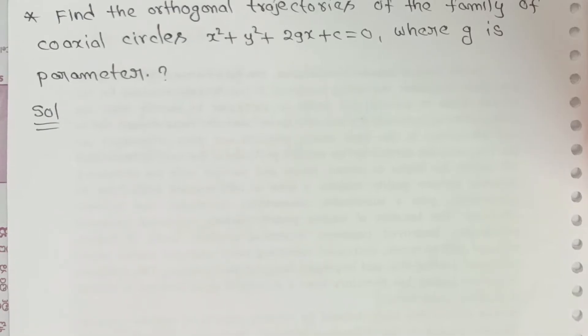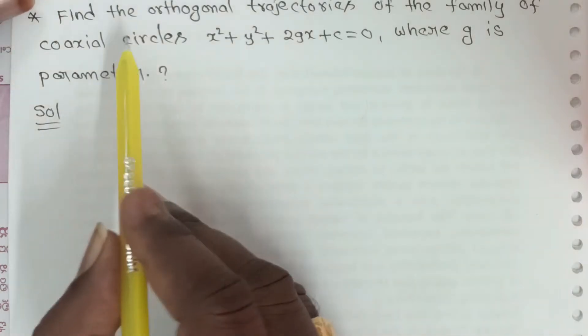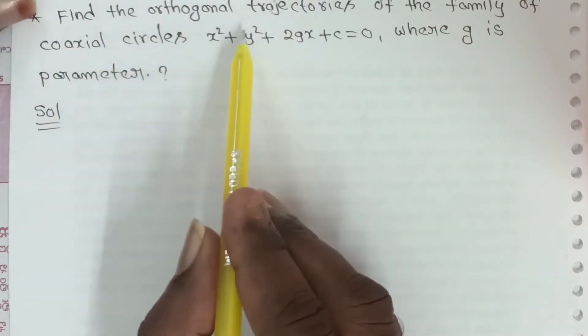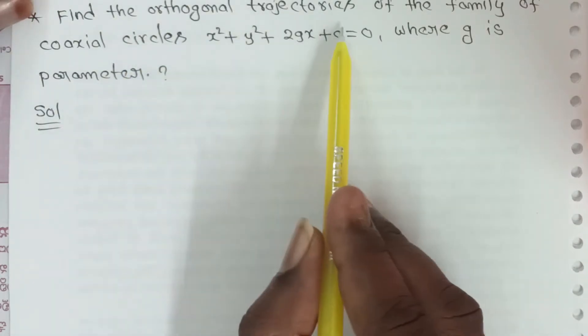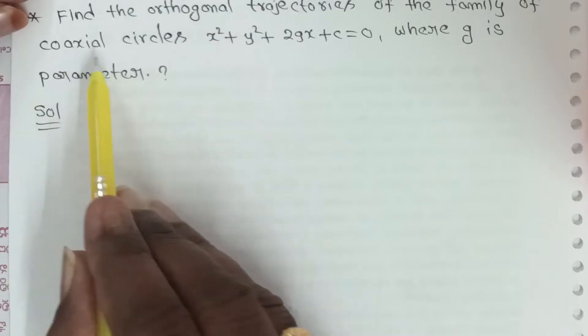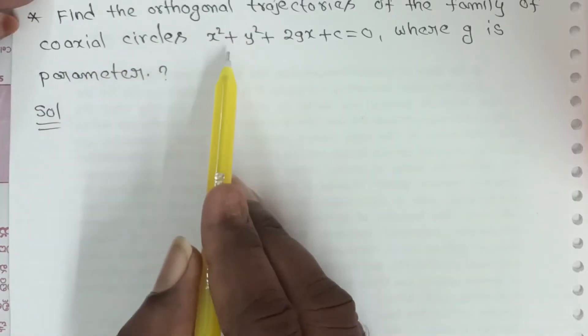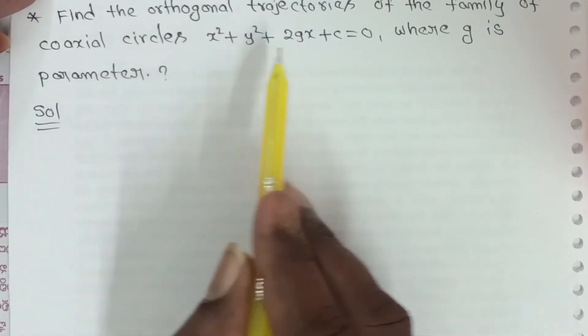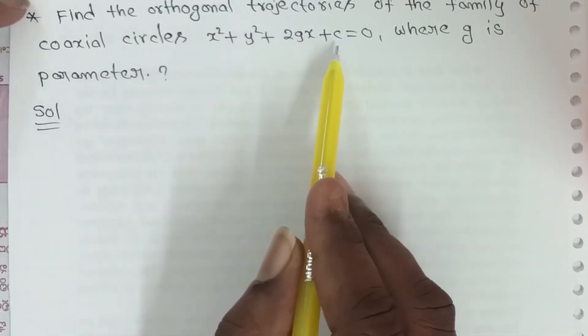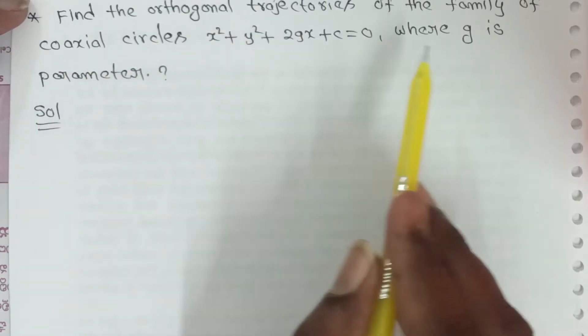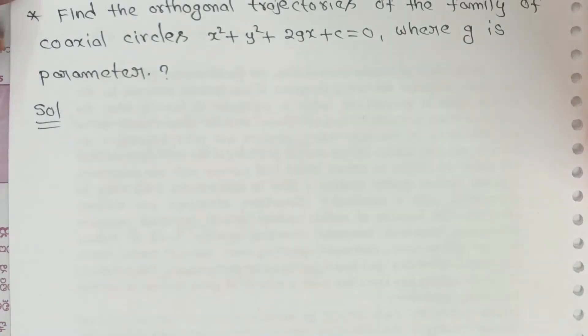Orthogonal trajectories are one of the most important problems today in class. Find the orthogonal trajectories of the family of coaxial circles: x² + y² + 2gx + c = 0, where g is a parameter.